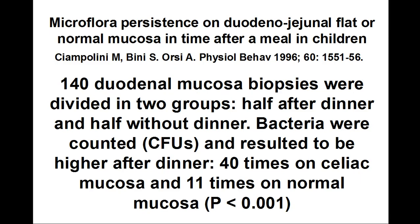The increased energy availability is associated with an intestinal absorption decrease. Intestinal copious nutrients promote bacterial growth. 140 duodenal mucosa biopsies were divided in two groups — half consumed a dinner and half without dinner. Bacteria were counted as CFUs and resulted to be higher after dinner: 40 times on celiac mucosa and 11 times on normal mucosa, P<0.001.